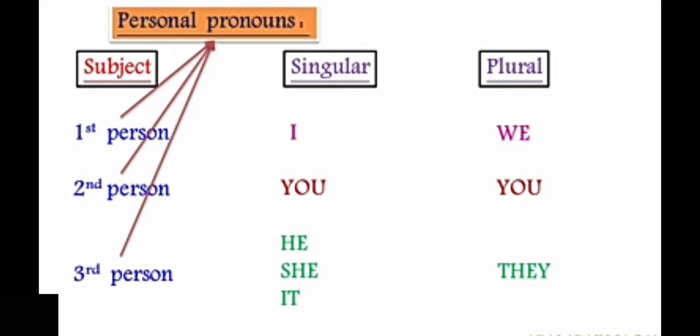We can divide the basic pronouns into singular and plural. I is first person singular and its plural form is we. You can be used singular as well as plural. Third person singular pronouns are three: he, she and it. They is third person plural form. I hope you have studied this in the previous classes — it is just to remind you.